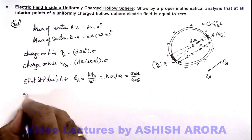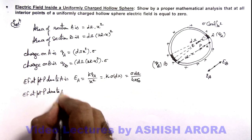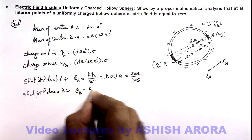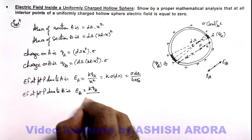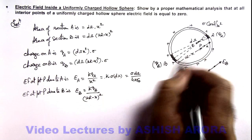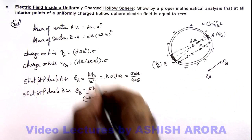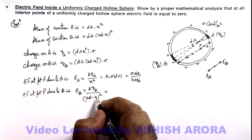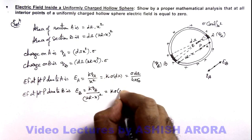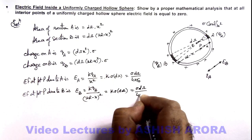And if we calculate the electric field at point P due to section B, this is given as eB = k·qB / (2R minus x)², because the distance of point P from this section is (2R minus x). So substituting the value of qB, (2R minus x)² gets cancelled out, and this will give us the same k·sigma·dω, which is sigma·dω / (4π·ε₀).